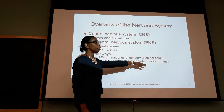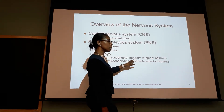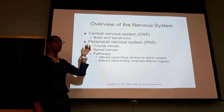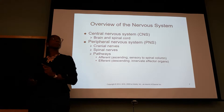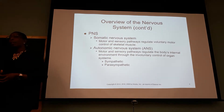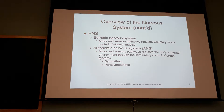Your efferent is innervating your effector organs. Your afferent is a sensory input that's sending information to the brain. We have a somatic nervous system, which is basically voluntary — voluntary motor. How we control our arms, our legs — that's voluntary, that's somatic. It controls the skeletal muscle system.